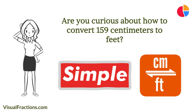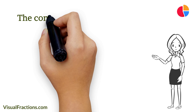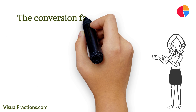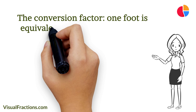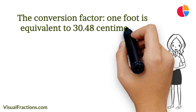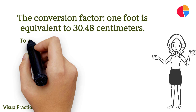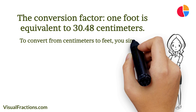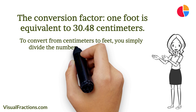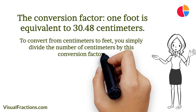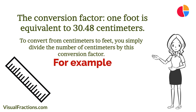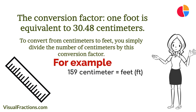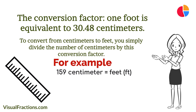Firstly, let's get familiar with the conversion factor. One foot is equivalent to 30.48 centimeters. To convert from centimeters to feet, you simply divide the number of centimeters by this conversion factor. Now let's dive into an example: suppose we want to convert a length of 159 centimeters to feet.